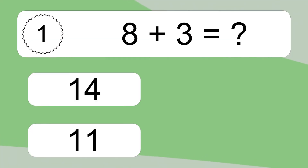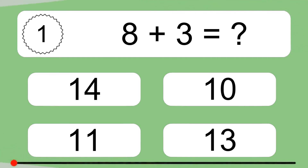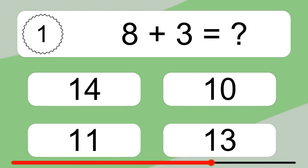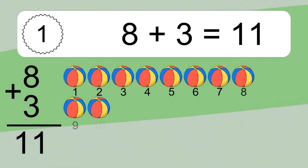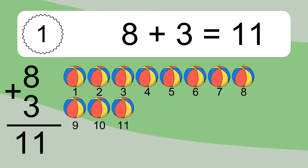8 plus 3 equals what? 8 plus 3 equals 11. Let's count it: 1, 2, 3, 4, 5, 6, 7, 8, 9, 10, 11.